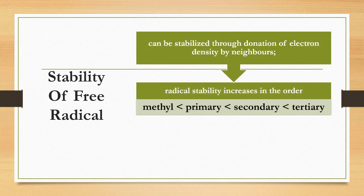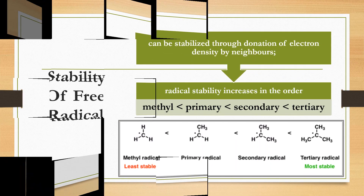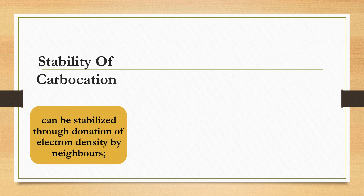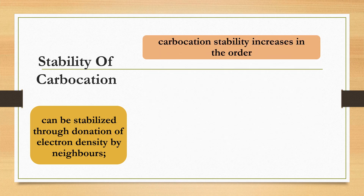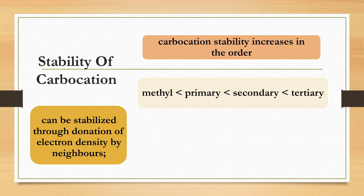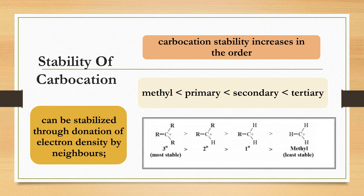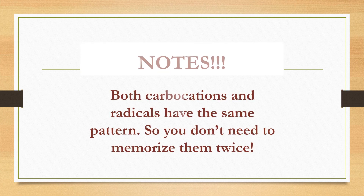For the stability of free radicals: radical stability increases in the following order — methyl has the lowest stability, then primary, then secondary, and tertiary has the highest stability. For carbocations, stability is also increased through donation of electron density by neighboring groups. Carbocation stability increases in the order of primary, secondary, and tertiary being the most stable. Note that carbocations and radicals follow the same stability pattern, so you don't need to memorize them separately.